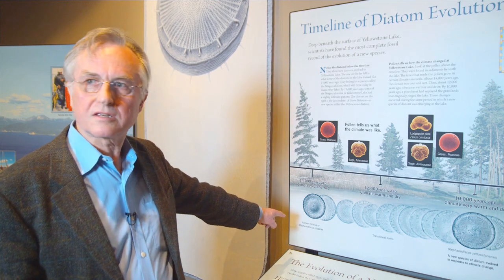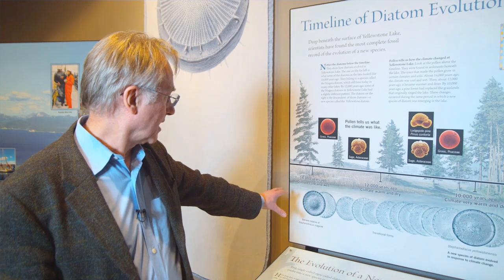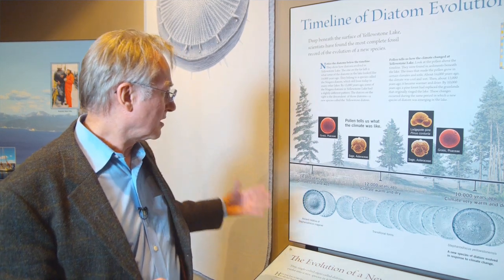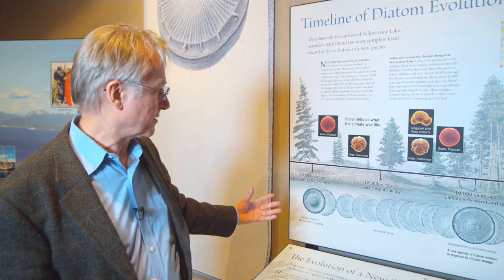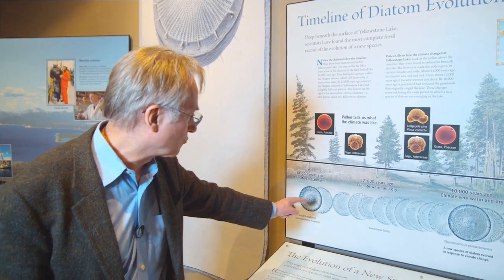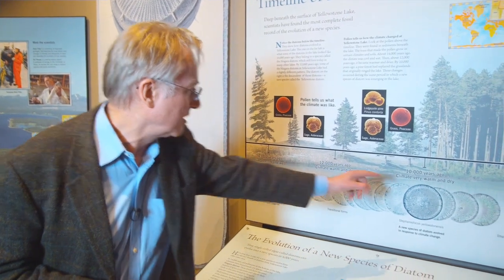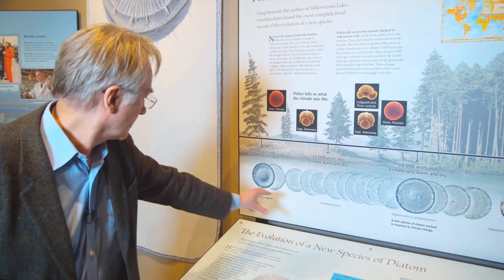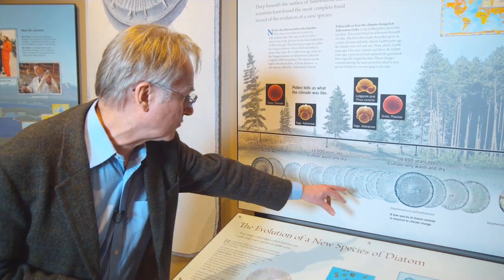If you take a core sample from the mud underneath the lake, you'll find Stephanodiscus niagara at 14,000 years old. About 14,000 years ago the climate was cold and wet, and the diatoms were just the same as the diatoms in the rest of the country. But as you look in more and more recent core samples — 12,000 years, 10,000 years — you get a gradual change, from Stephanodiscus niagara gradually changing through all these transitional forms.